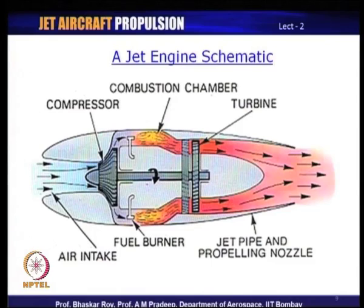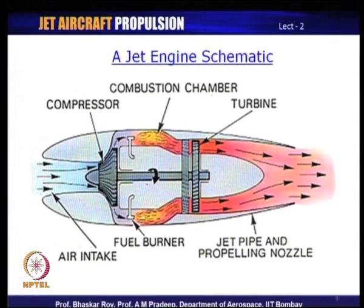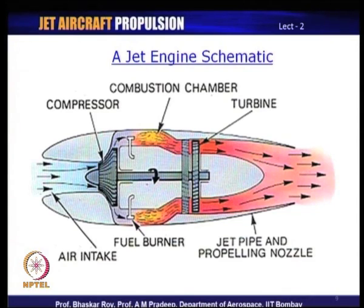Let us take a look at a simple jet engine. We have a compressor, a combustion chamber with a fuel burner that injects fuel, and the burning of the fuel creates hot gas — a mixture of air, energy, and burnt fuel. This hot gas goes through the turbine and then out as a jet. The jet has high kinetic energy or momentum. The momentum change across the entire jet engine is created by the fact that the hot gas has substantially higher momentum than the incoming cold air.